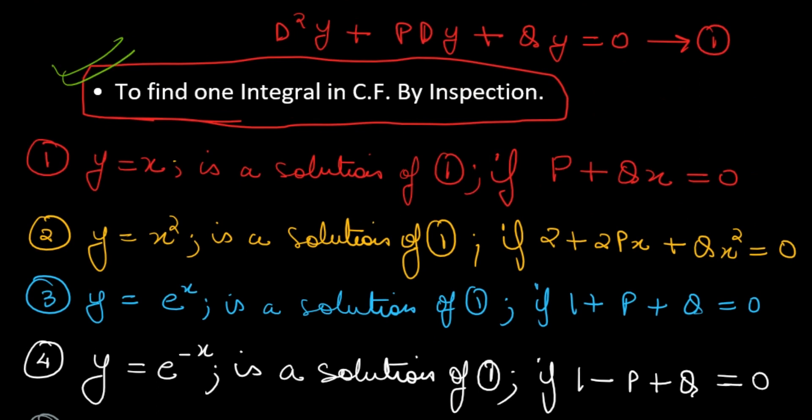These six points tell you how to find one integral in the CF by inspection method. The equation will be given to you and you will inspect and find one integral. This is the second form for finding the CF for a linear differential equation of second order. I will show you one question on each point in the next video. Thank you for watching, students — see you in the next video, bye-bye.